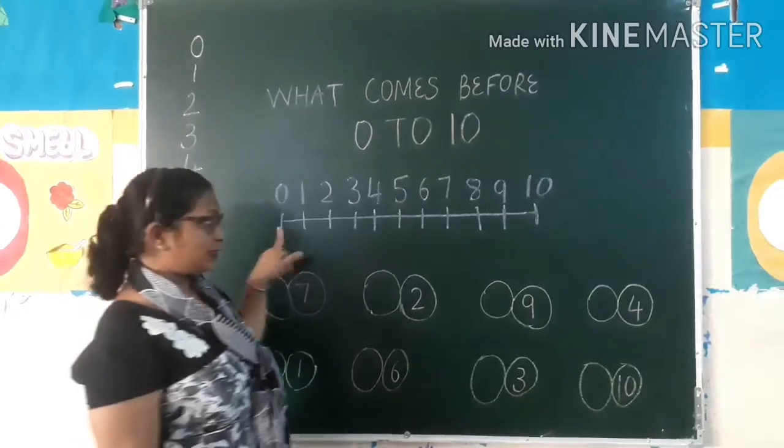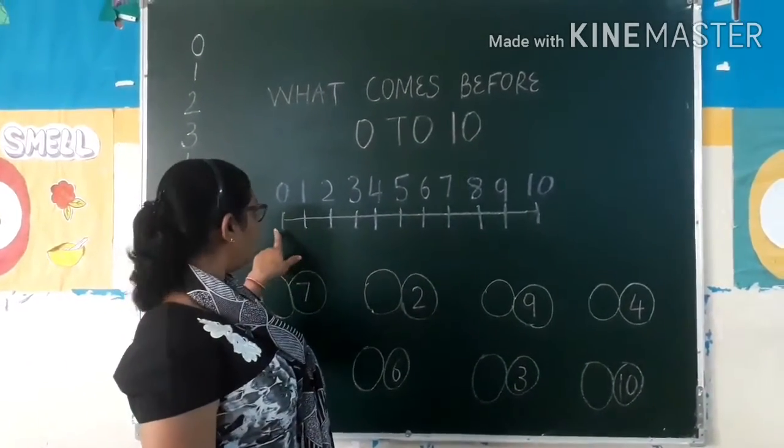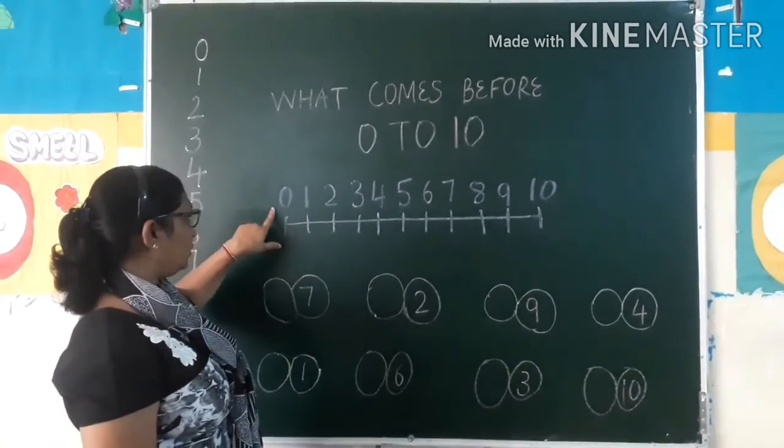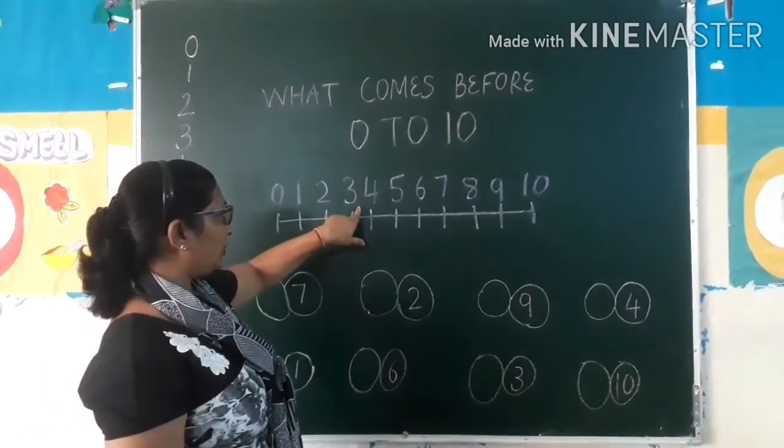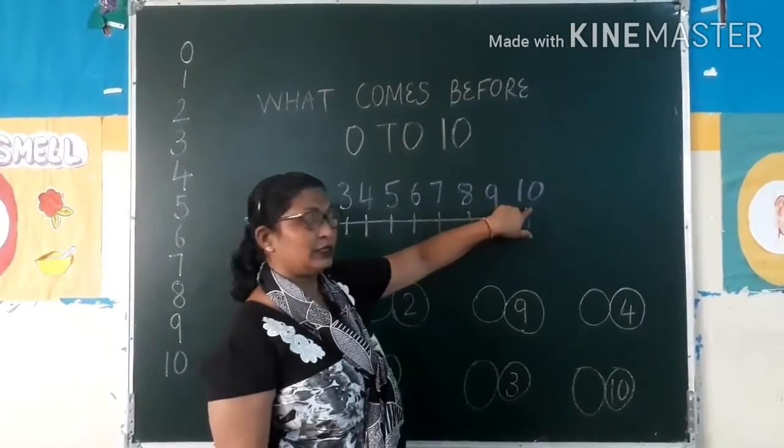Now come to number line. This is our number line. As you all know, this is our number line. Let's read. Zero, one, two, three, four, five, six, seven, eight, nine, ten.